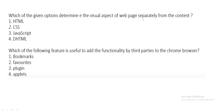The next question: which of the following determines the visual aspect of a web page separately from the content — HTML, CSS, JavaScript, or DHTML? The visual aspect of a web page, separately from the content, is determined by CSS. So CSS is the correct answer.